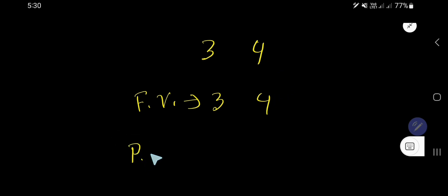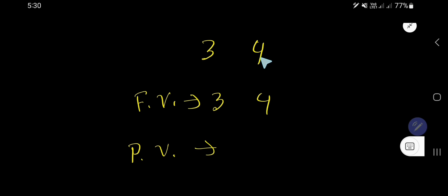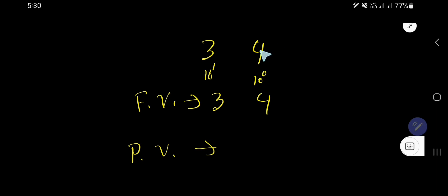Now we'd like to find out place value. In case of finding out place value, you need to consider the position of the digit. This place is called the 1's place, or 10 to the power 0. This place is called the 10's place, or 10 to the power 1. To find out place value, we need to multiply the face value by the position of that digit.